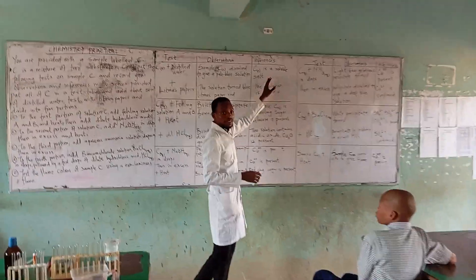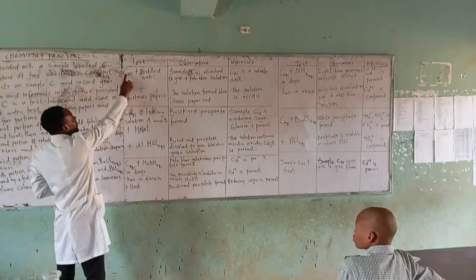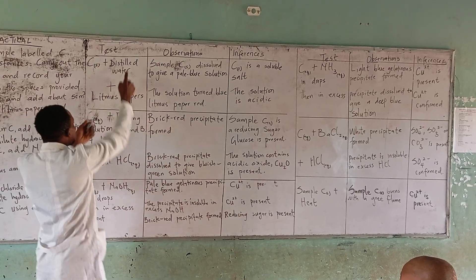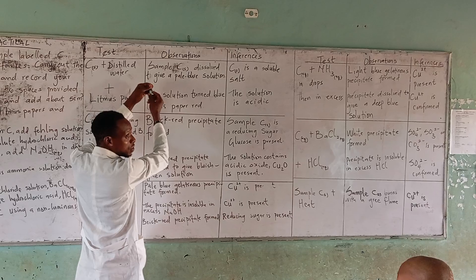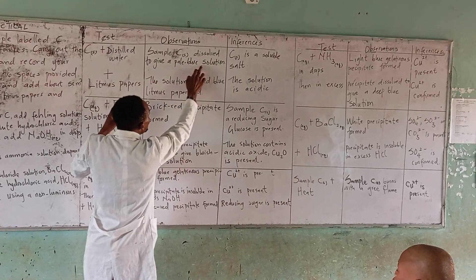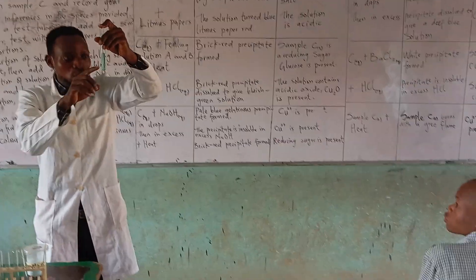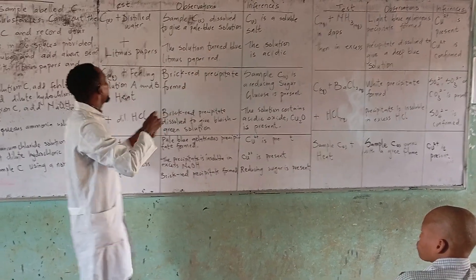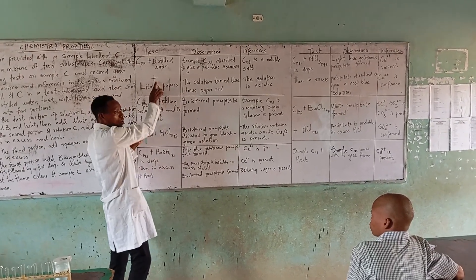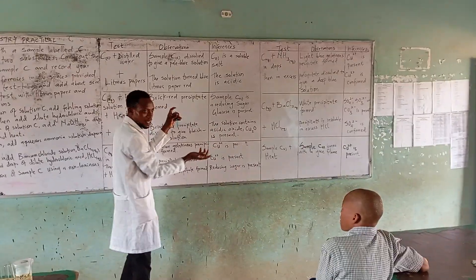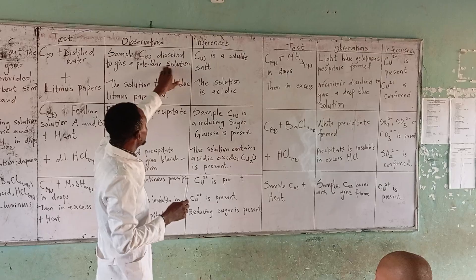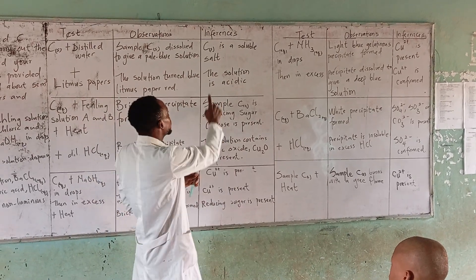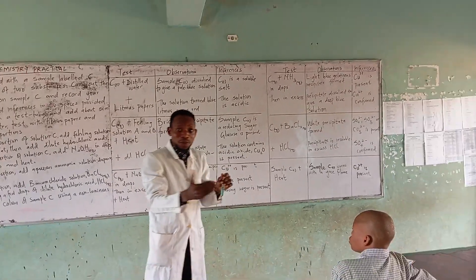Now we come to your table of observations and inferences. For the observation, you write C because the sample is a solid sample — so I will put 'solid' here to show it is in solid state, plus distilled water. The resulting solution: sample C dissolved to give a pale blue solution. The salt dissolved completely to give this pale blue — you can also use 'light blue.' We tested with litmus paper: the solution turned blue litmus paper red. For the inference: it is a soluble salt, and the solution is acidic, because acid turns blue litmus paper red.